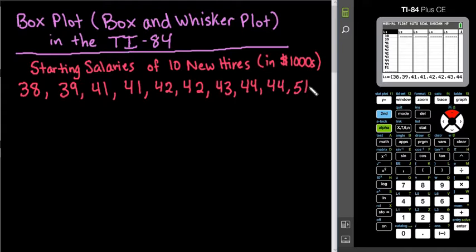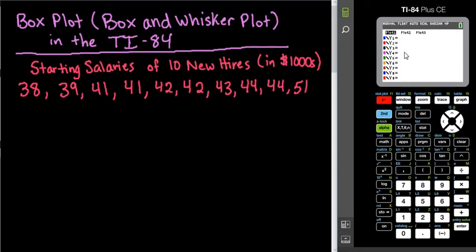And then what we're going to do is, I always check my Y equals screen just to make sure that I don't have anything in here first, and I don't, so I'm not going to clear anything out. If I did, I would go ahead and clear it out at that time, because sometimes if I get errors, that's where I get them from.